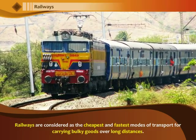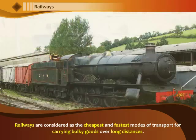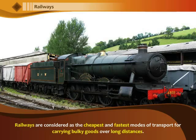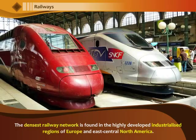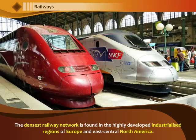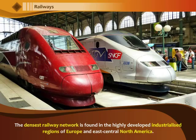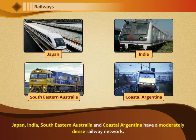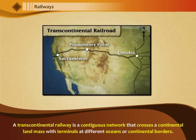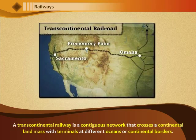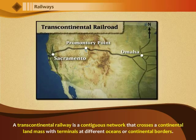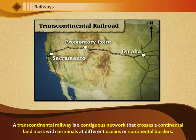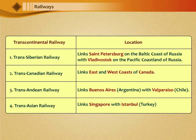Railways are considered as the cheapest and fastest modes of transport for carrying bulky goods over long distances. The densest railway network is found in the highly developed industrialized regions of Europe and East-Central North America. Japan, India, Southeastern Australia and coastal Argentina have a moderately dense railway network. A transcontinental railway is a contiguous network of railroad that crosses a continental landmass with terminals at different oceans or continental borders.